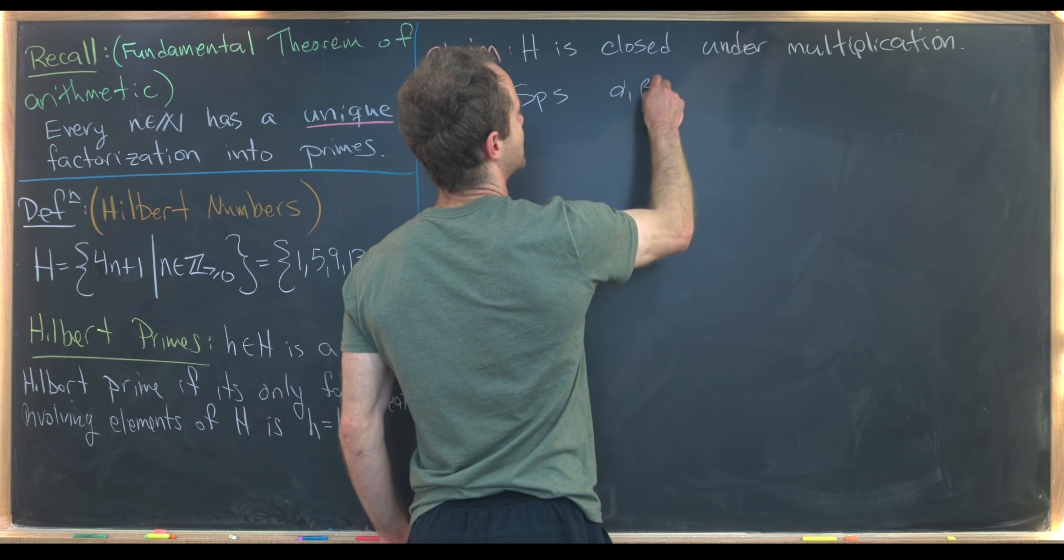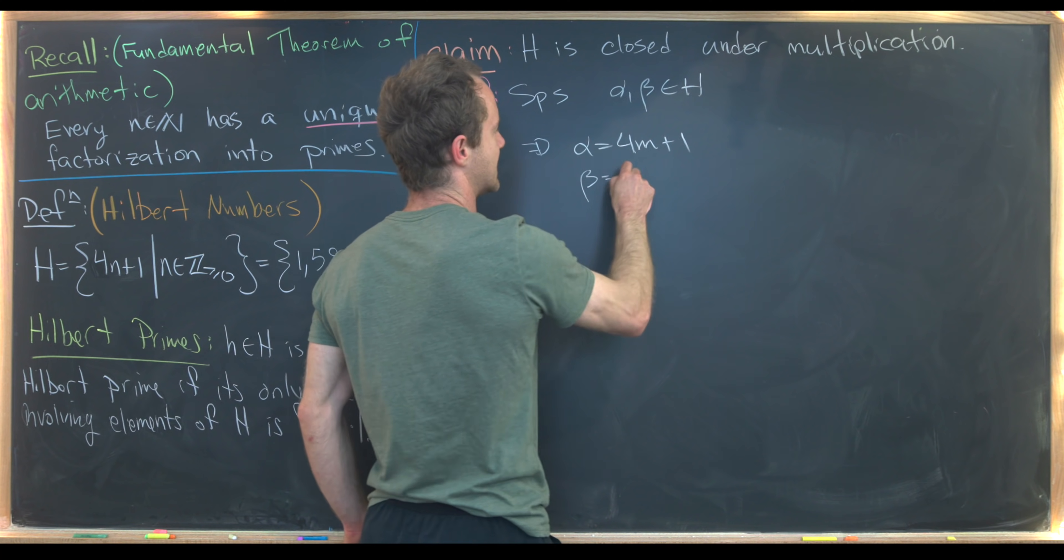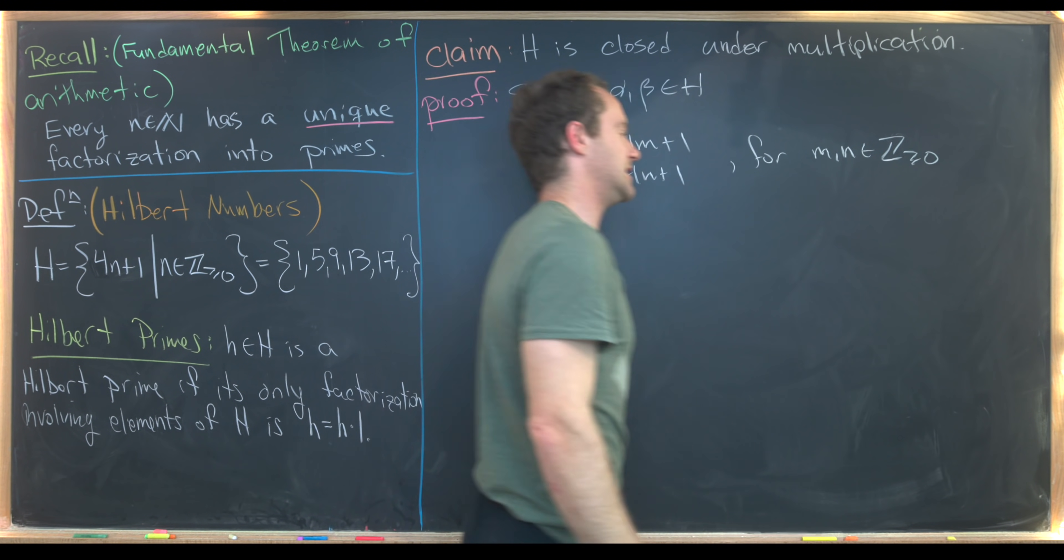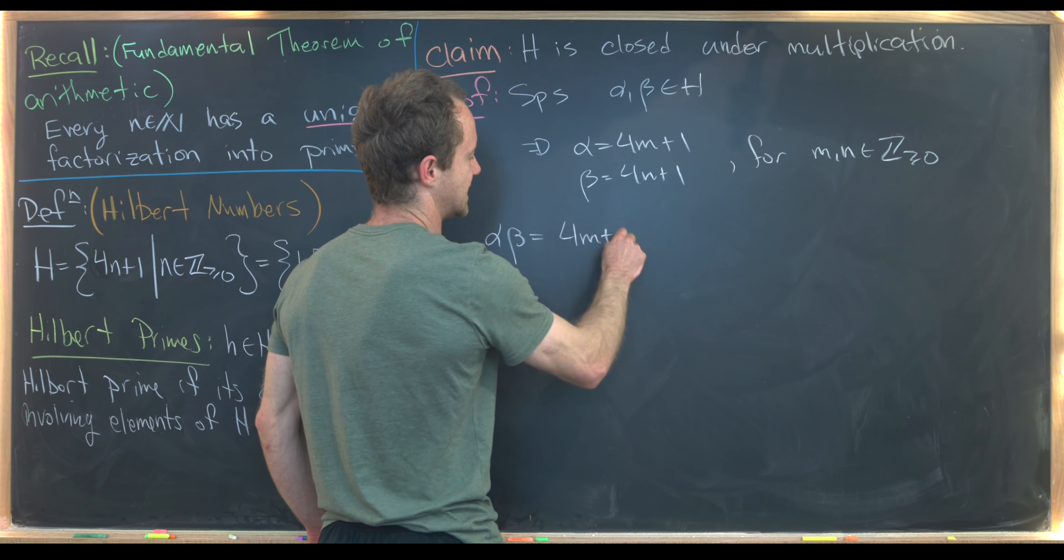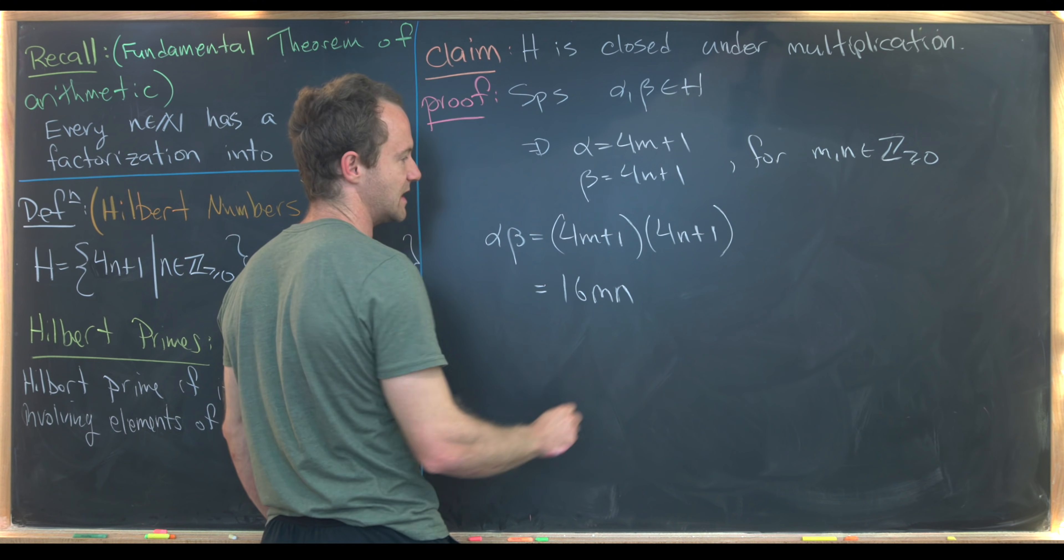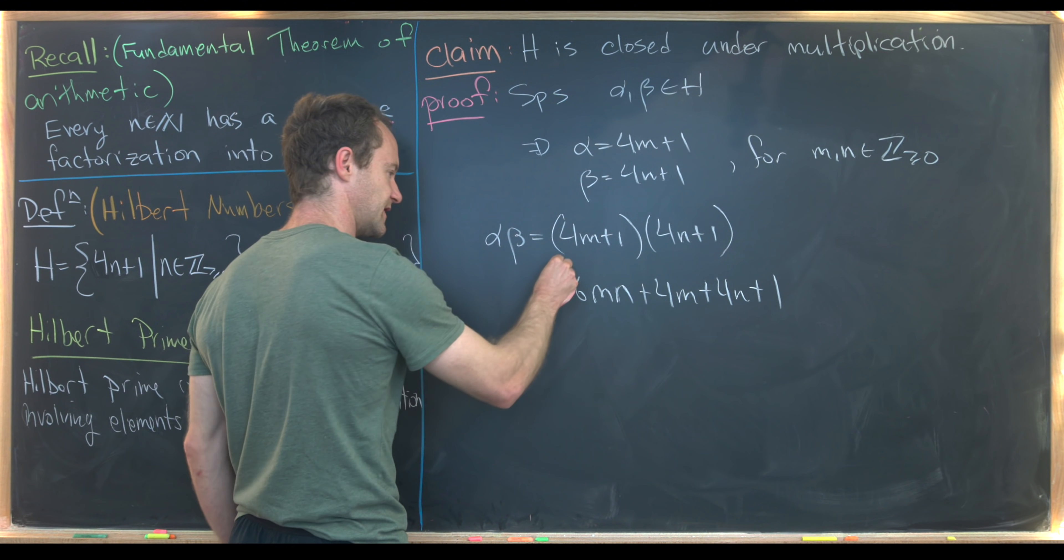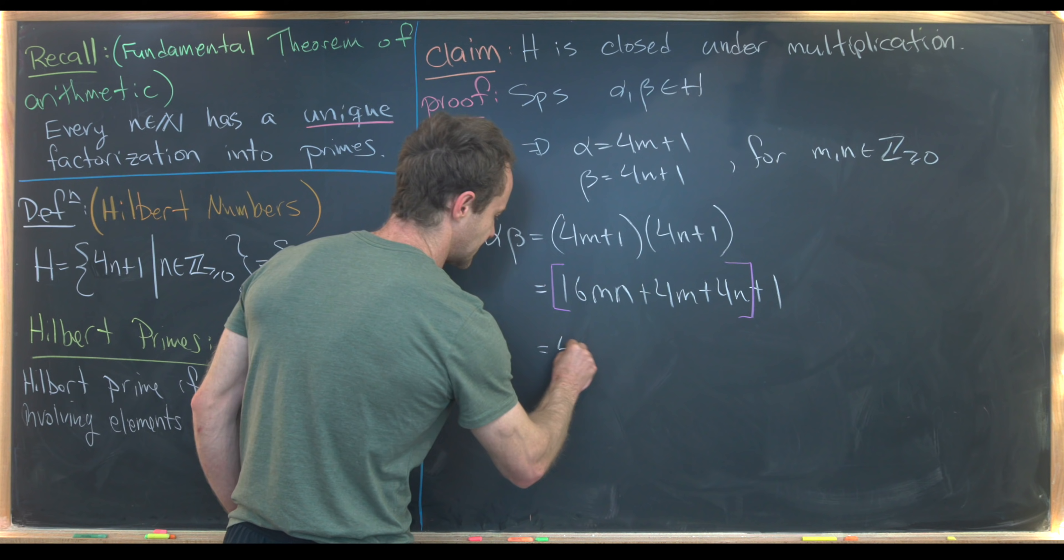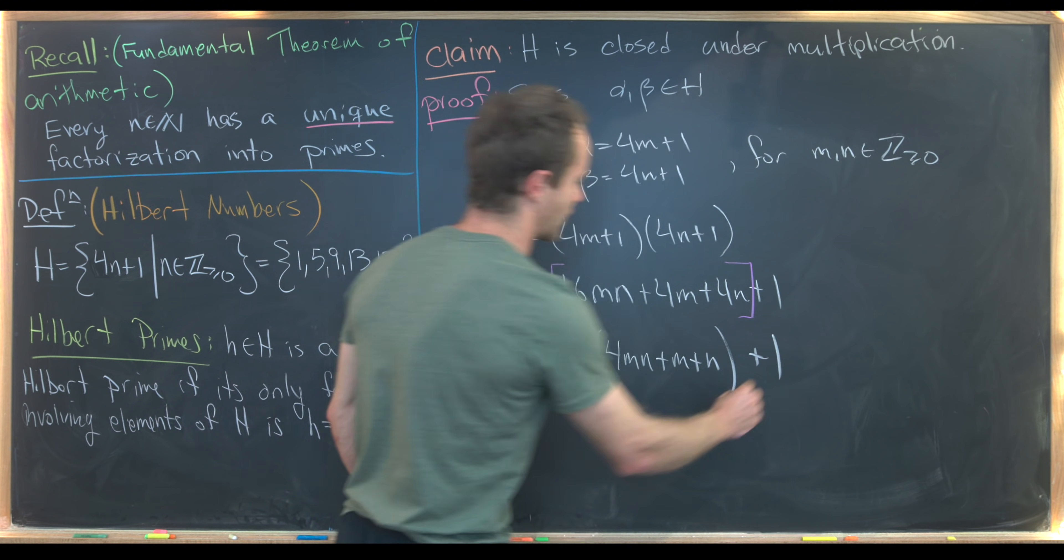Let's suppose alpha and beta are in H. That means that alpha is equal to 4m plus 1 and beta is equal to 4n plus 1, for m and n in the set of non-negative integers. Now let's go ahead and take the product alpha times beta. We've got 4m plus 1 times 4n plus 1. That's going to give me 16mn plus 4m plus 4n plus 1. But look what we can do here, we can think about all of this being grouped, and then multiplying a 4 out.